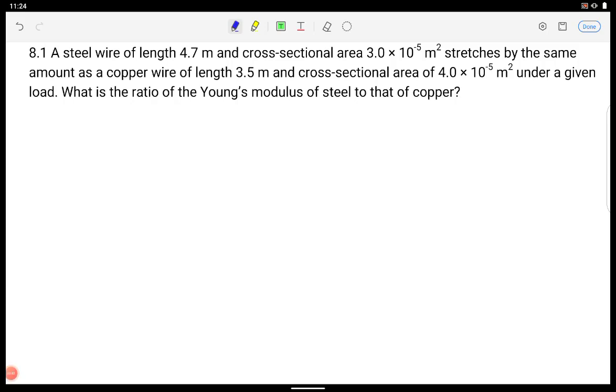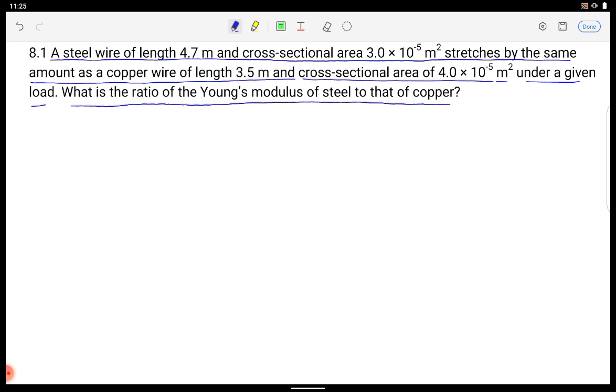Hello students, NCERT ka Mechanical Properties of Solids ka question number 8.1 discuss kar rahe. A steel wire of length 4.7 meter and cross-sectional area 3 into 10 to the power minus 5 meter square stretches by the same amount as a copper wire of length 3.5 meter and cross-sectional area 4 into 10 to the power minus 5 meter square under a given load. What is the ratio of the Young's modulus of steel to that of copper?